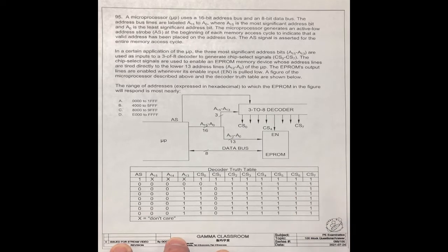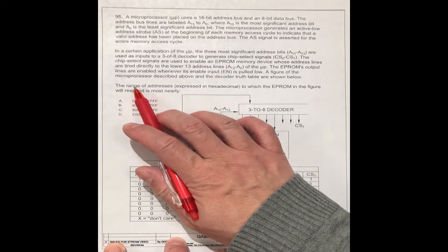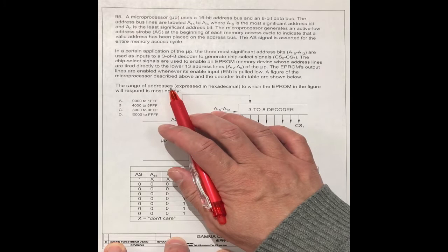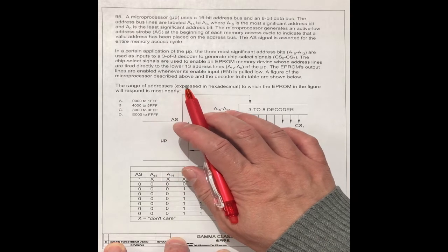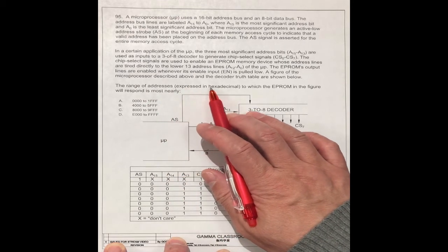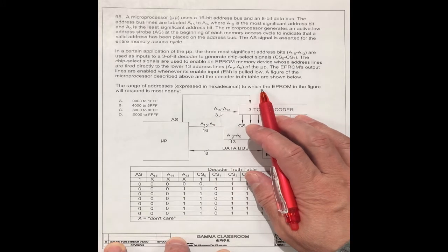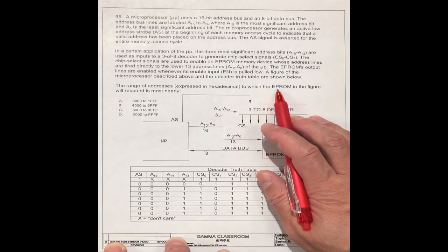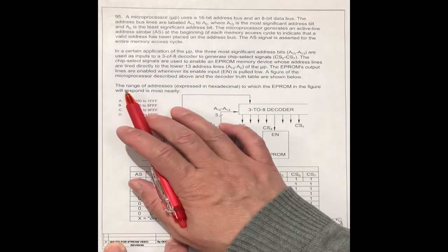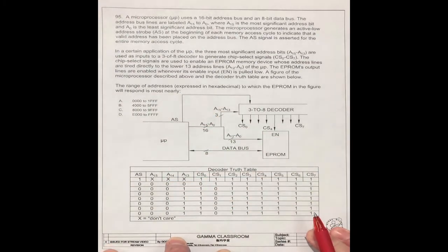The question asks: the range of addresses expressed in hexadecimal to which the EPROM in the figure will respond is most nearly what number?